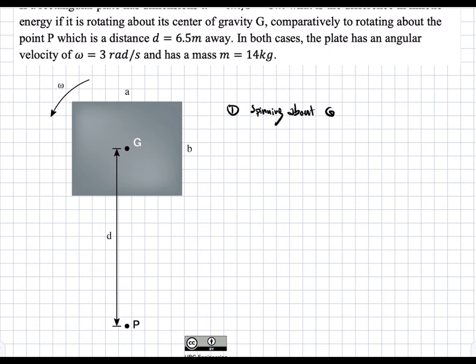About G, we know that the kinetic energy, or also known as T_G, is going to be equal to one-half I_G omega squared.